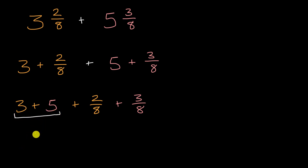And now what is three plus five? Three wholes plus five wholes. Well, that's just going to be eight. And then what is two-eighths plus three-eighths? Well, if I have two of something, in this case eights, and I add three more of that something, in this case eights, I'm gonna have five of that something, in this case five-eighths.